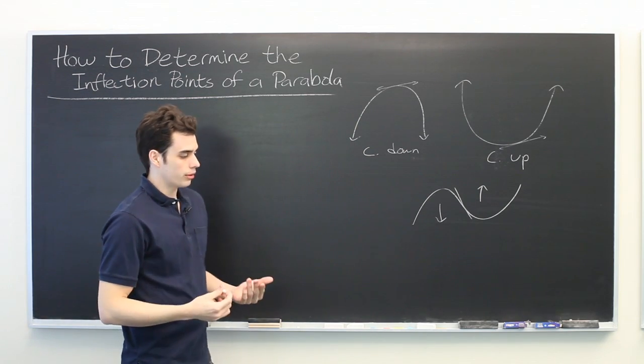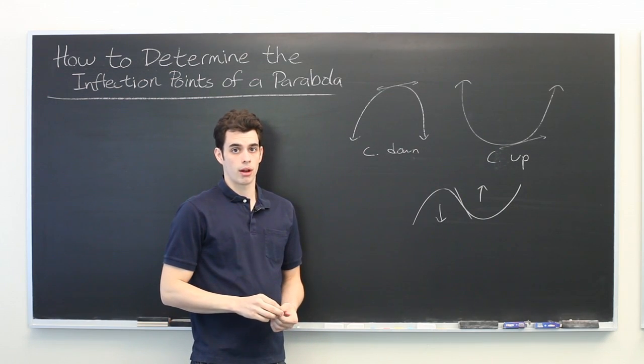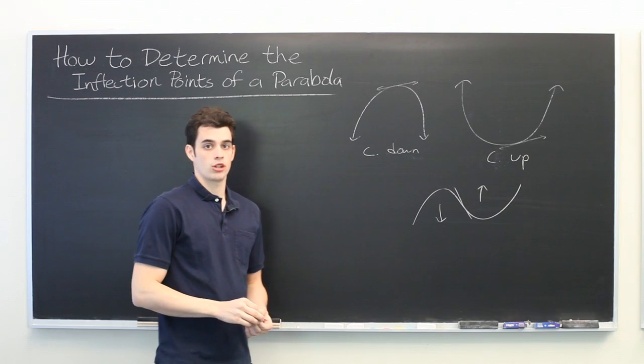Well, in general, the way to determine an inflection point is to look at the second derivative of a function and see where that changes sign.